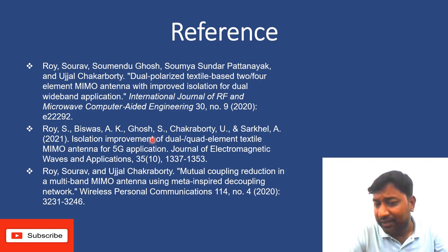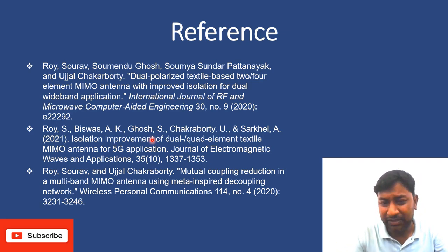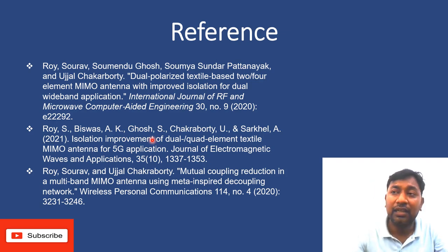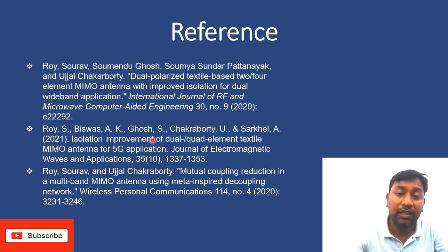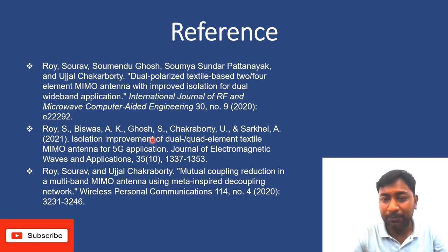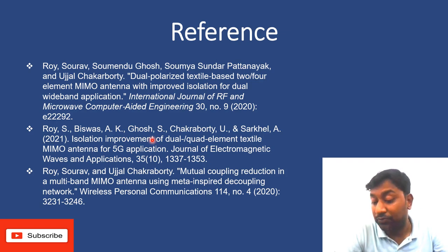The problem is you will not get the exact same substrate. However, if you use any jeans substrate from the market, their permittivity or dielectric constant range is approximately between 1.6, 1.7, and 1.8. So you can use any type of jeans substrate, but you should clearly mention the thickness you are using. These are the references you can use for the jeans substrate.